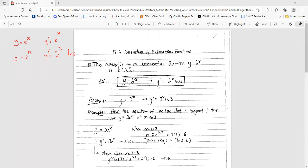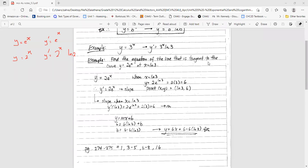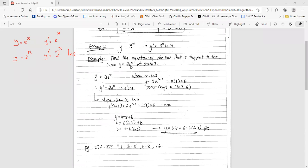So find the equation of the line tangent to the curve. The function is y equals 2e to the power x, and I want to find the equation of the tangent line at x equals ln 3. So I need to find the slope.